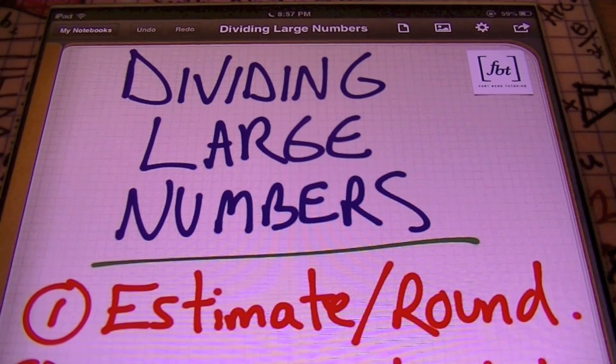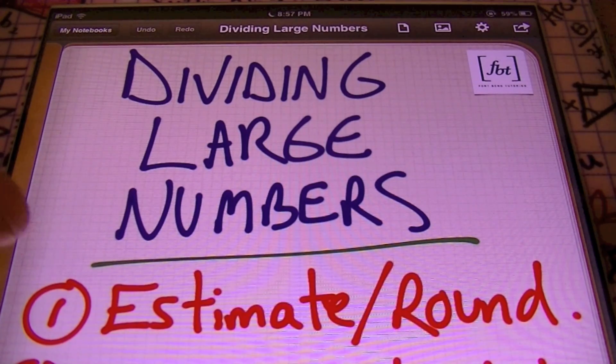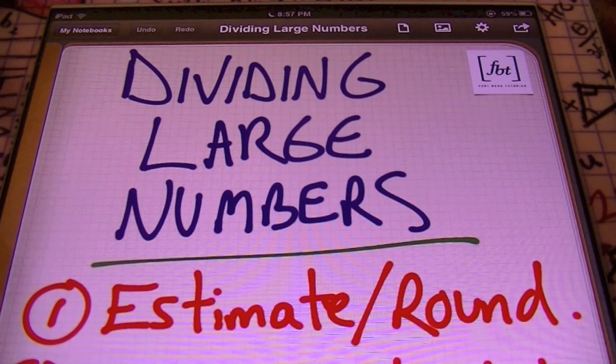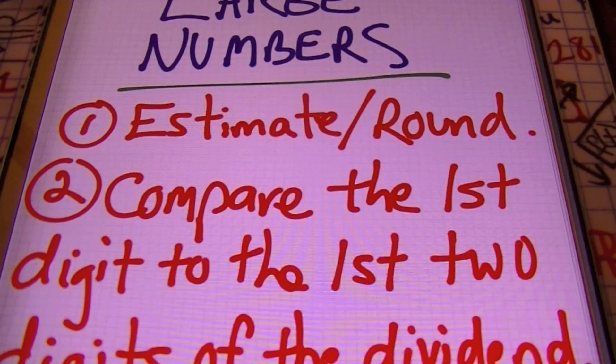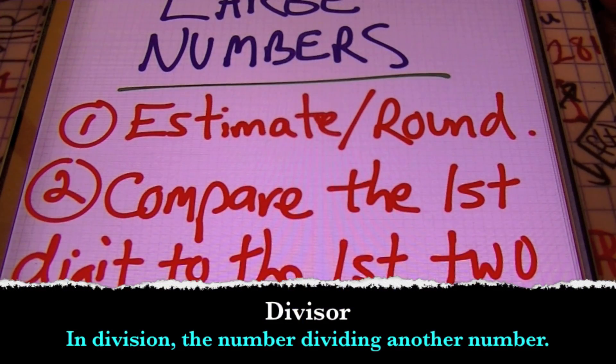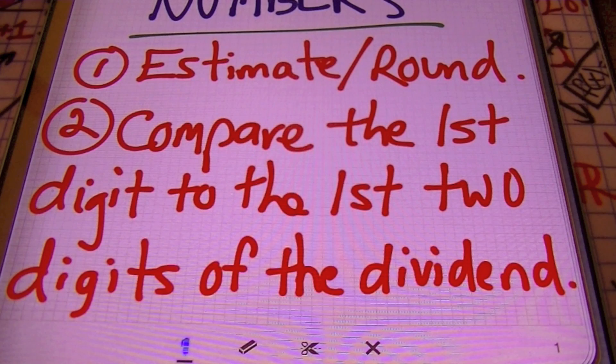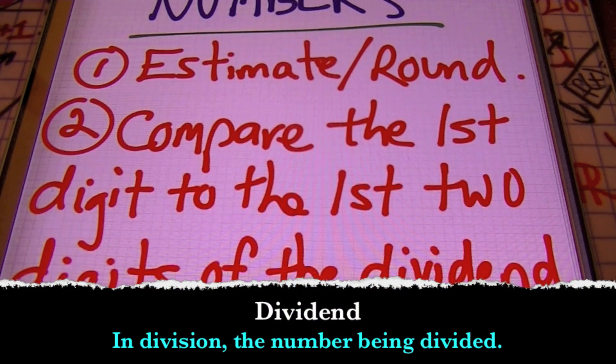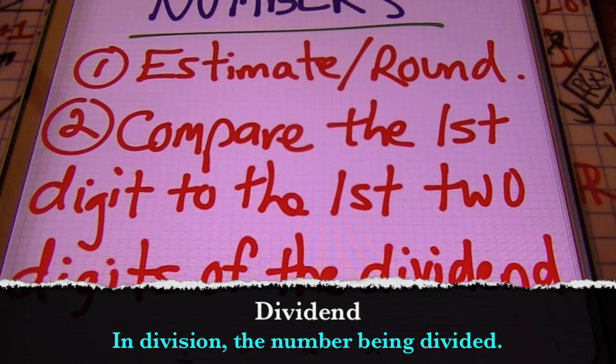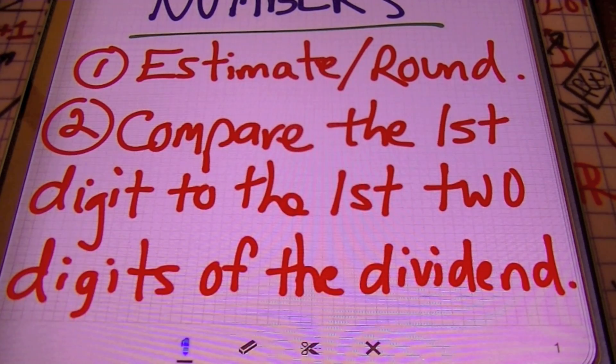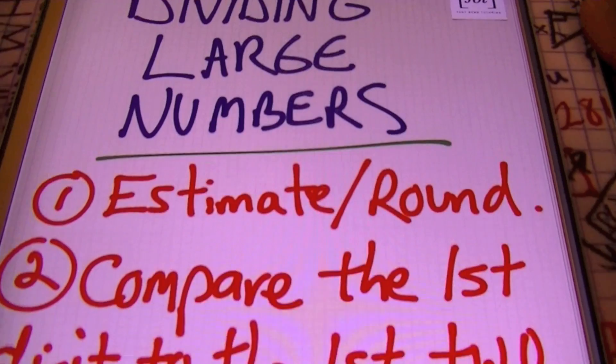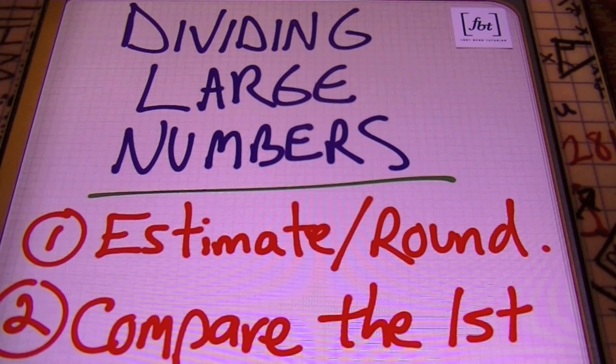So dividing large numbers, there are going to be two preferred methods that I'm going to showcase today. And that is one, estimating and rounding that divisor, that first number that's going to be on the outside of the long division symbol. And also comparing the first digit to the first two digits of the dividend. Those two different ways to deal with large numbers, at least that's the way I do it. So I'm going to show you how I do it. This is going to be dividing large numbers. Let's check it out.